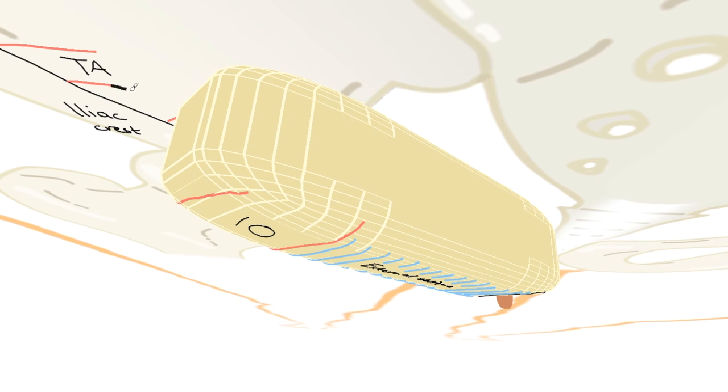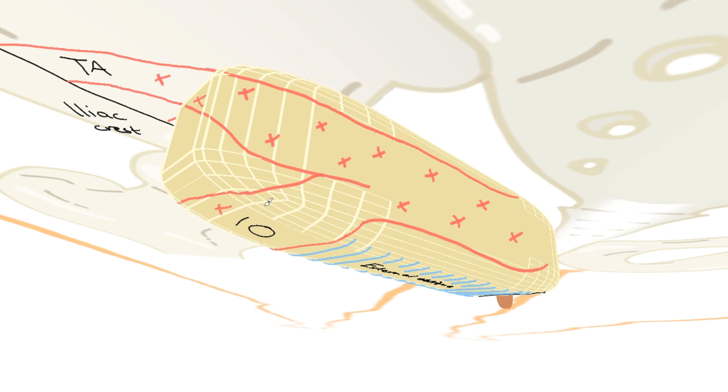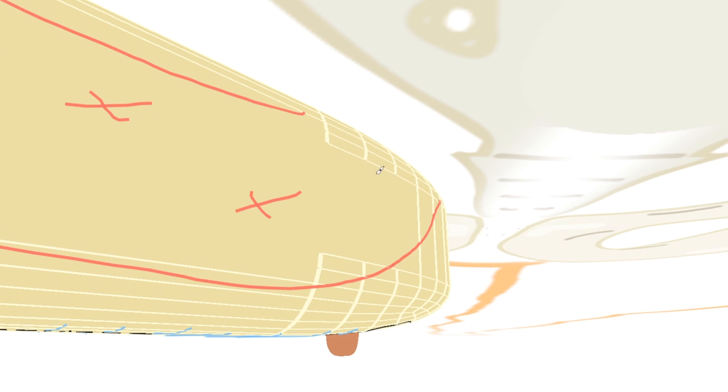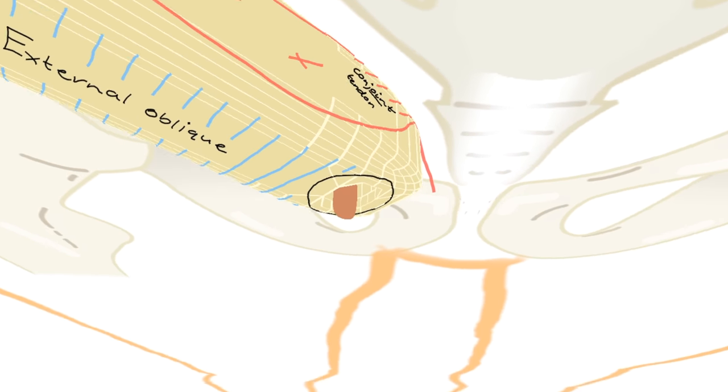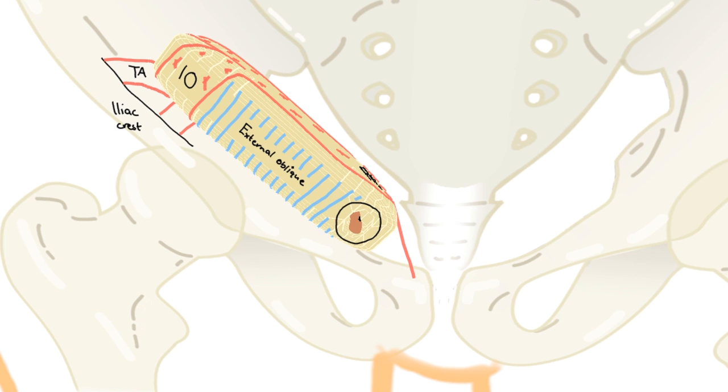So IO and TA join together to arch over the top. So what we imagine as the superior wall of the inguinal canal is simply the part of these muscles which is flying free, arcing over the contents of the canal. They end up joining together to make the aptly named conjoint tendon, which inserts onto the pubic tubercle, down here.